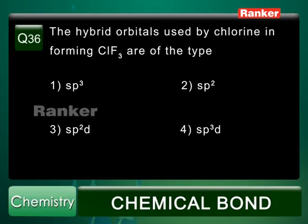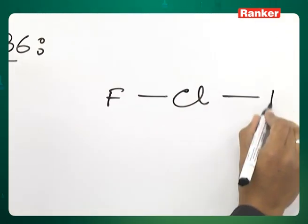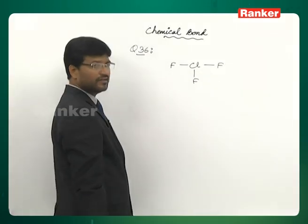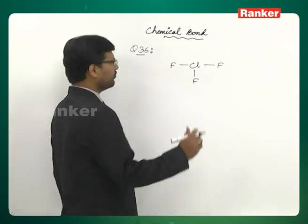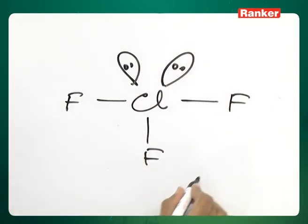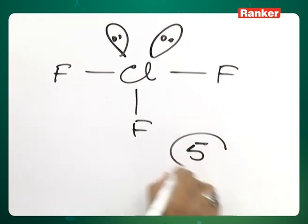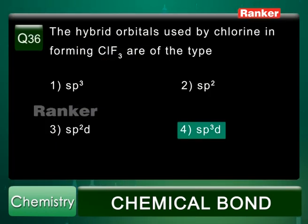Question number 36: The hybrid orbitals used by chlorine in forming ClF3. Correct answer is sp3d. In ClF3, chlorine has seven valence electrons; after forming three bonds with three fluorines, four electrons remain as two lone pairs. So there are two lone pairs and three bond pairs — five electron pairs total. Therefore hybridization must be sp3d. Correct answer is the fourth option.